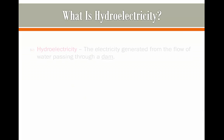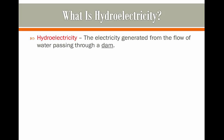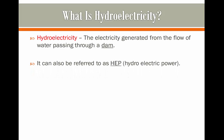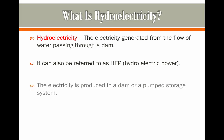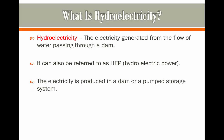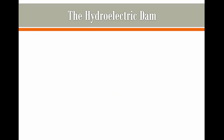What is hydroelectricity? Hydroelectricity, or HEP which stands for hydroelectric power, is the electricity generated from the flow of water passing through a dam. As I've just said it can be referred to as HEP. The electricity is produced in a dam or a pumped storage system, which we're now going to explain.